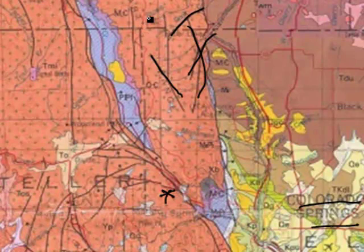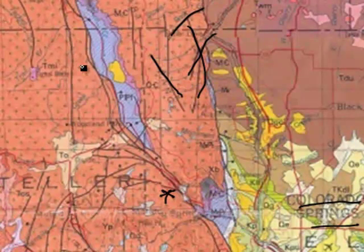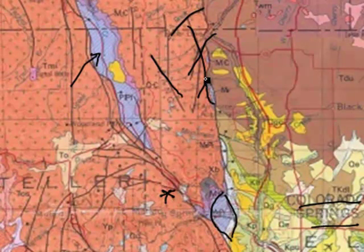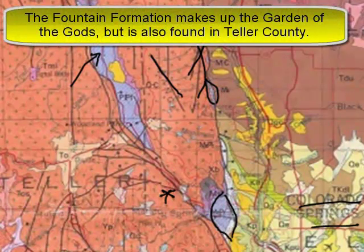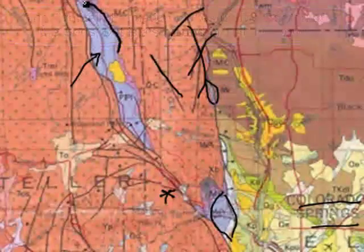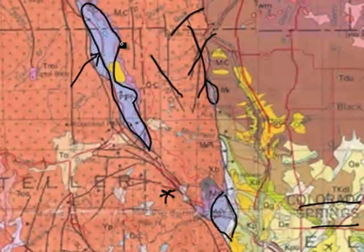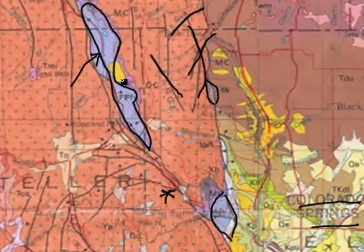Something intriguing to look at: this blue right here is an interesting formation — it's actually a sedimentary rock formation. It is the same blue, and it's called the Fountain Formation. This Fountain Formation is what makes the Garden of the Gods park with all those red rocks. We also see these red rocks up here. These things were laid down — actually, it might be the yellow ones. I think actually the yellow is the Fountain Formation.